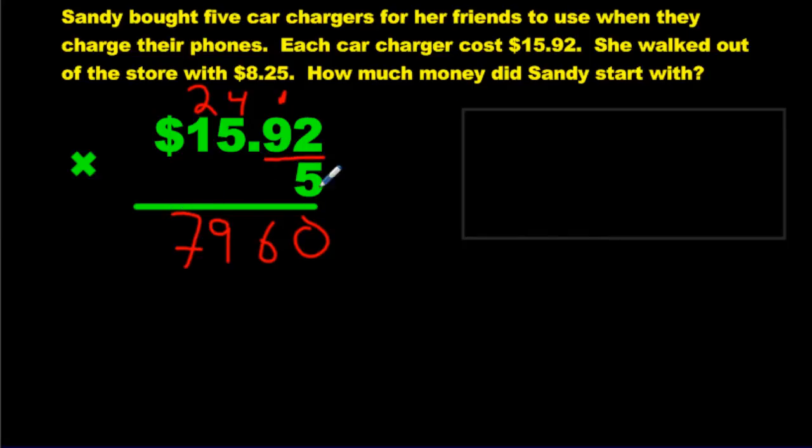Two numbers after the decimal, which means I need two numbers after the decimal here. So I'll put that there, there. We got two numbers and two numbers. This one doesn't have a decimal. It's right there, but it's invisible. So we don't care about it. So $79.60 is what she paid altogether. But when she walked out of the store, she had $8.25 in her pocket. So what does that mean?